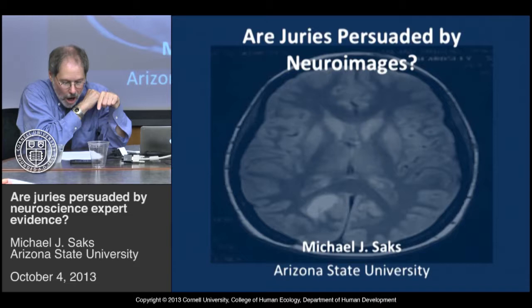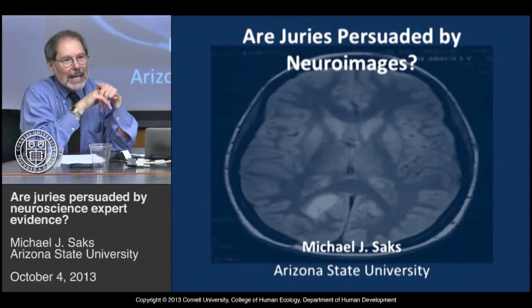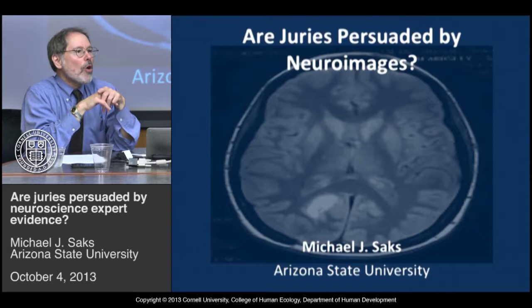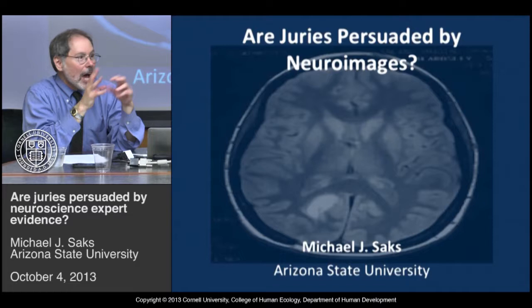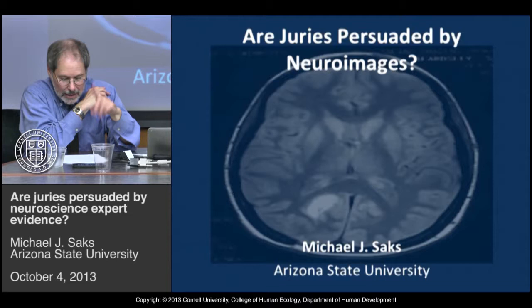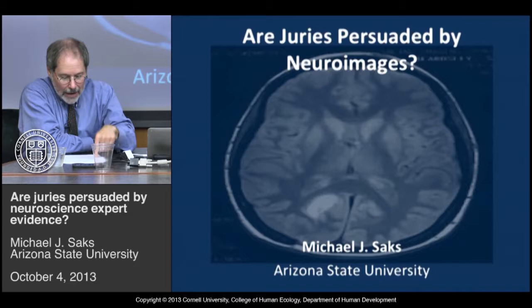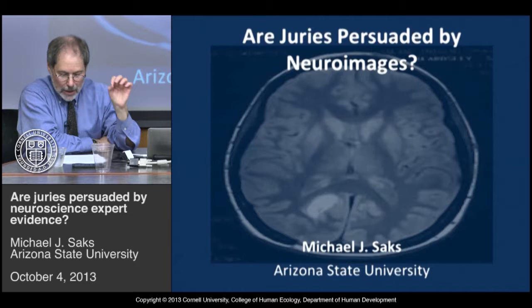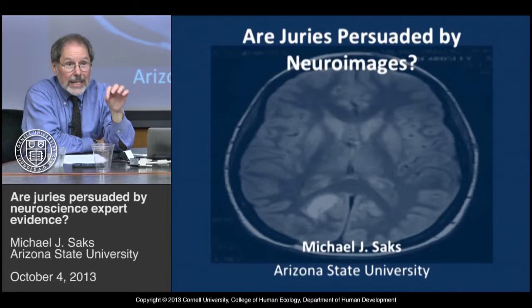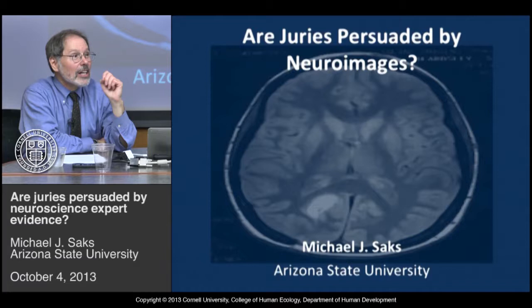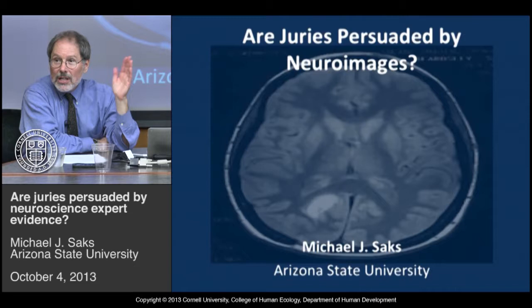This talk is as much about designing studies as it is about the substantive research findings. Even if you don't care how persuasive neuroimages are to juries, there are methodological lessons that you might find interesting. How do you design a study that is capable of zeroing in on the effect you're interested in and not be fooled by subtle confounds? The answer is the generous use of control groups.